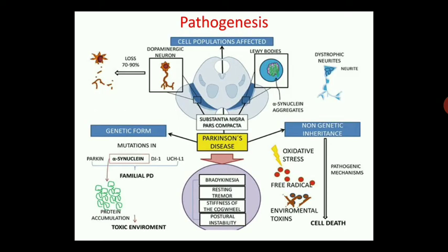While considering the pathogenesis, we can consider two factors: first, the dopaminergic neuron, and second, Lewy bodies. The substantia nigra or substantia nigra pars compacta is the key region. Due to any kind of toxins, environmental factors, drugs, or genetic factors, a trigger molecule generates Parkinson's disease, causing dopaminergic neurons to undergo degeneration with a 70 to 90 percent loss. Alpha-synuclein aggregates can be seen in this context.